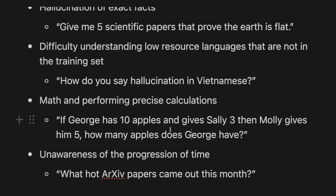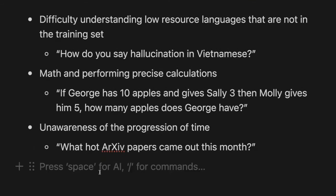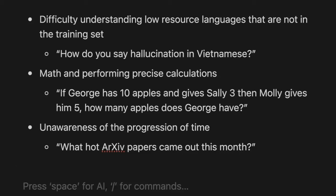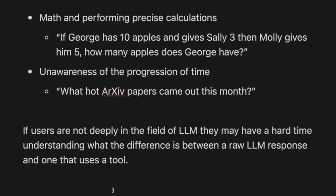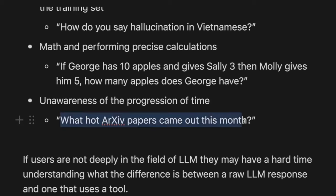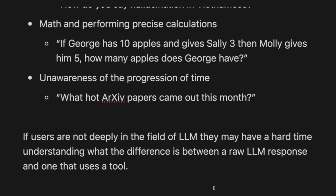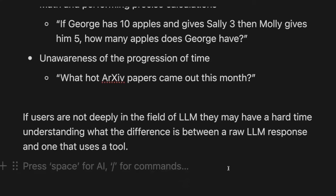Math and performing precise calculations — like word problems where George has 10 apples, gives Sally three, then Molly gives him five, how many does George have? And finally, unawareness of the progression of time, like knowing what hot archive papers came out this month. People used to Google search, which has up-to-date knowledge, sometimes have a hard time understanding what an LLM is good at. This technique combines these capabilities together in an interface that makes it transparent to the user that the language model is using a tool.